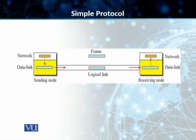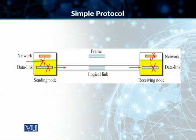The frame that arrives at the receiving node's data link layer gets consumed immediately. The receiving node receives this data, extracts the packet out of that particular frame, and passes it on to the network layer. So the packet gets encapsulated at the sending data link layer, and at the receiving data link layer it gets decapsulated — the packet is taken out of the frame and transmitted to the network layer. There is no flow control or error control required.